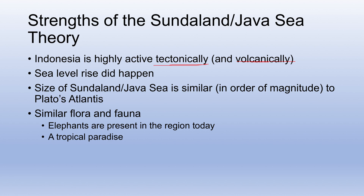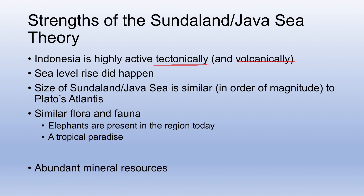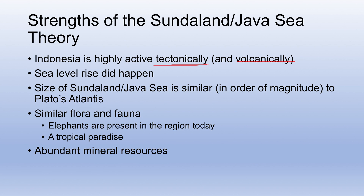We also know that the flora and fauna — the plants and animals of the region — are actually very similar to those described for Atlantis. Elephants actually live in Sundaland and the Java Sea area to this day, as was stated by Plato in that supposed 12,000-year-old world. And it is, in fact, kind of a tropical paradise, as Atlantis was also described. There's also abundant mineral resources — Atlantis was said to have a super abundance of minerals, and while it's questionable whether Indonesia is that endowed, one can clearly say they have a certain amount of mineral resources that are actively mined today.